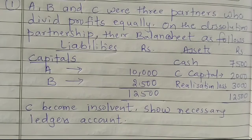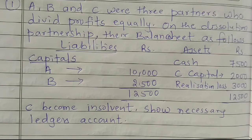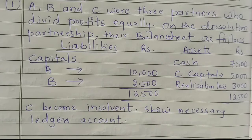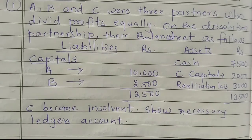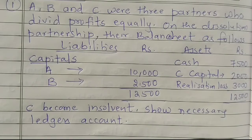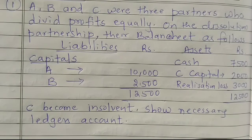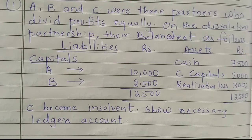Before I start solving the problem, I want to recapitulate what we learnt in lesson number 2. In the previous lesson I talked about types of insolvencies and insolvency laws applicable in India. There are two types of insolvency: insolvency of a partner and insolvency of a firm. Two types of rules are applicable: the Presidency Towns Insolvency Act 1909, applicable to Mumbai, Kolkata and Chennai, and the Provincial Insolvency Act 1920, applicable to persons who reside in the rest of India.